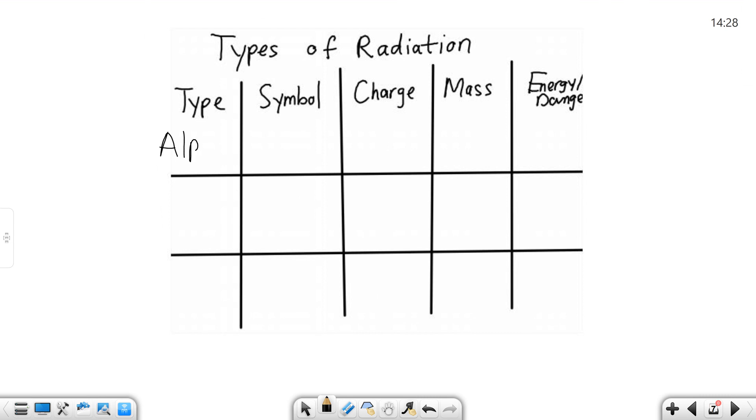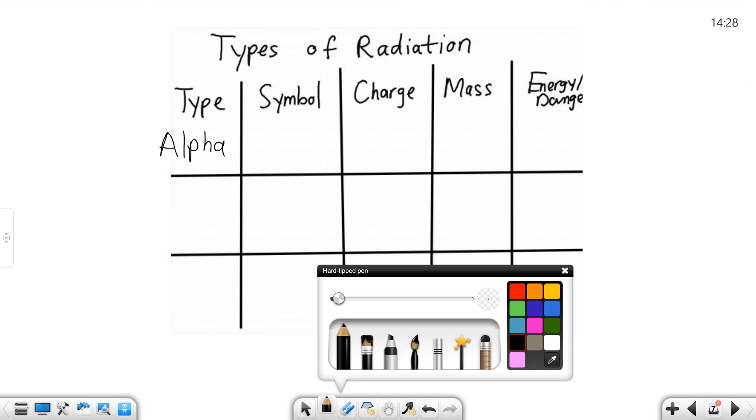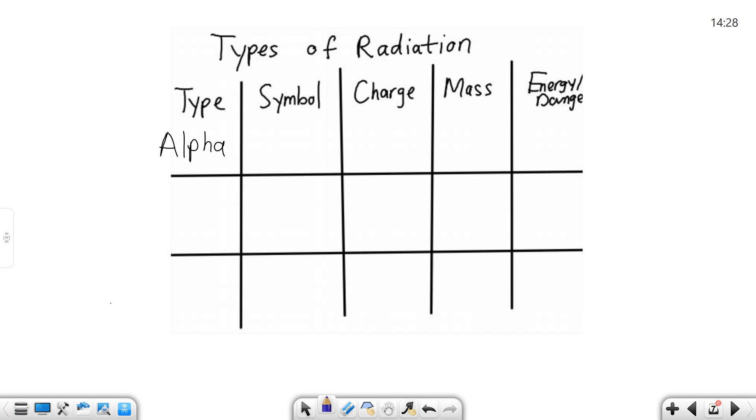All right so the first type of radiation we have out there is called alpha. The symbol for it that we're going to see is 4-2 HE. Now you might recognize that as helium. An alpha particle is the size of a helium nucleus and it is made up of two protons, and this is the mass number at the top, which means there's two protons and two neutrons, but it's not a helium atom.